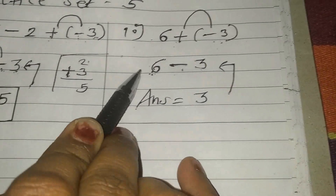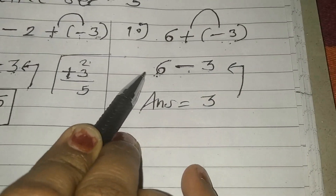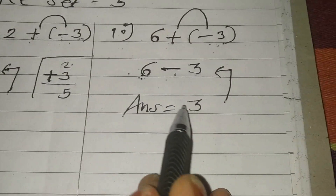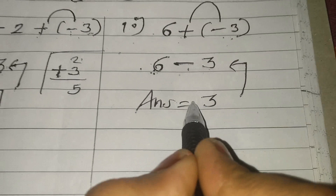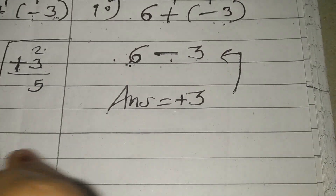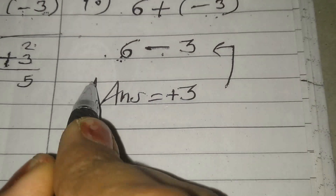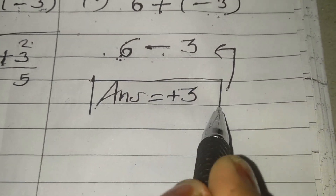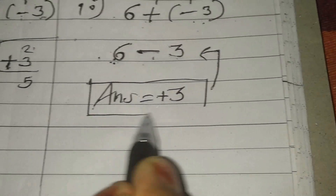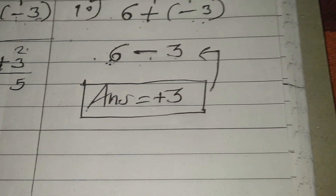Sign of 6 — nothing is there, so positive sign. If you give plus sign to the answer, then also correct. If you don't give, then also correct — no issue. So I hope you understand problem number 10.